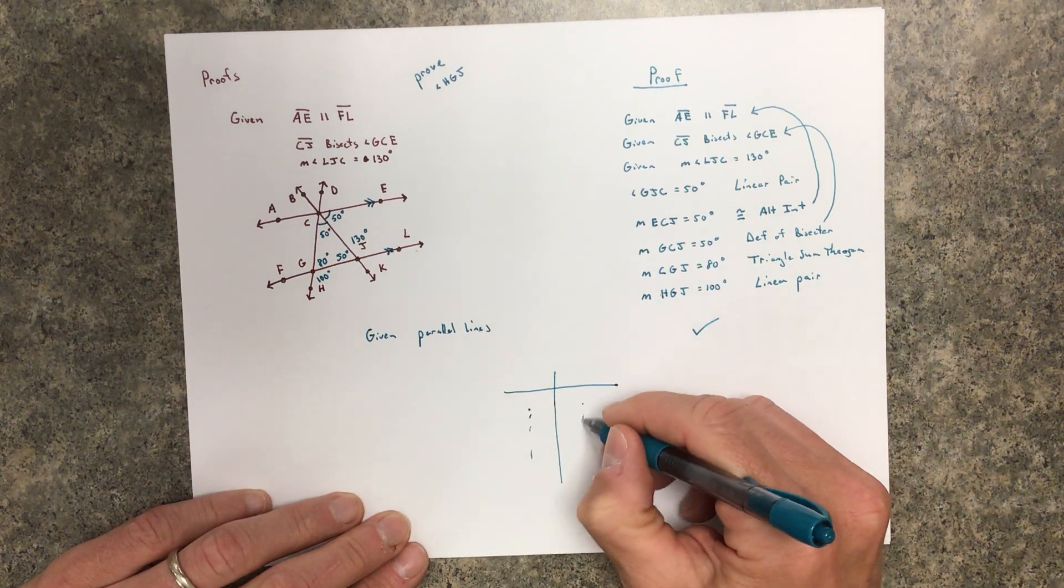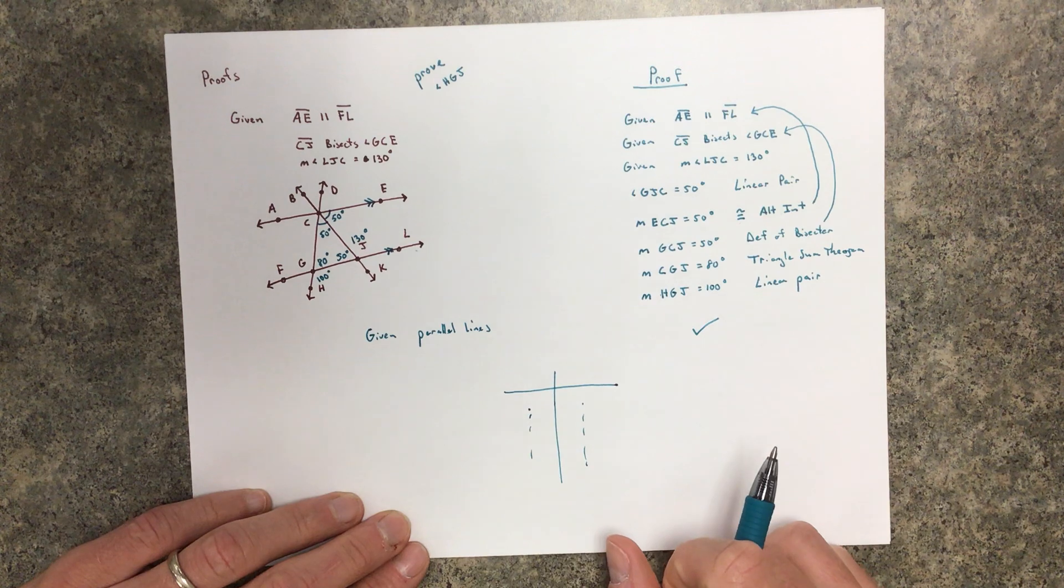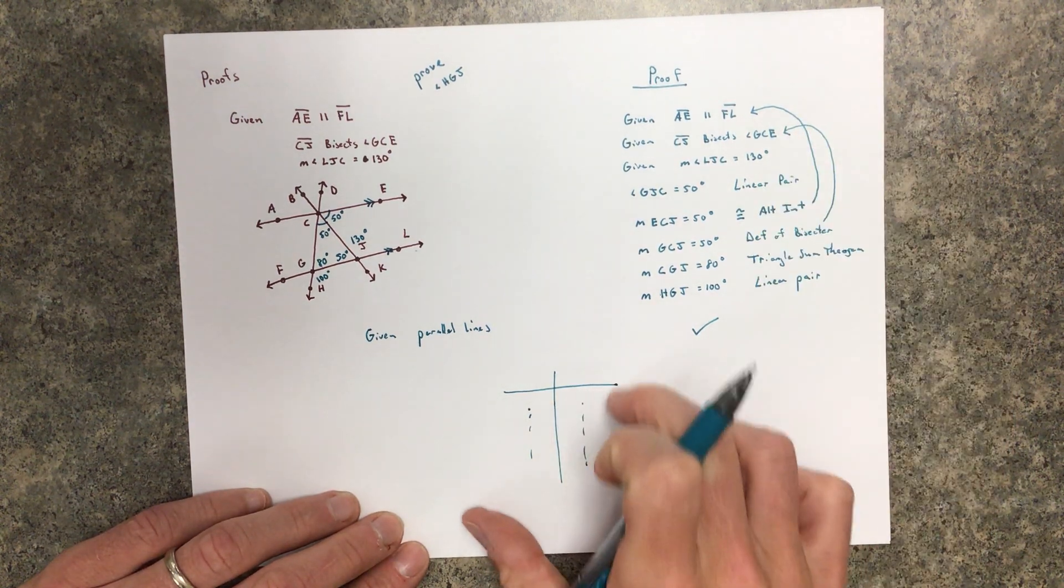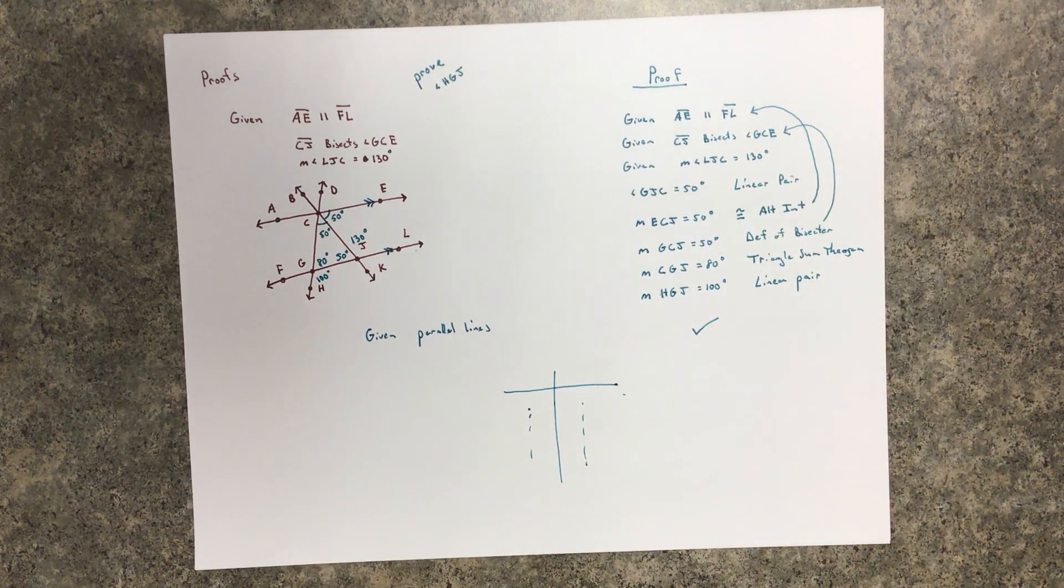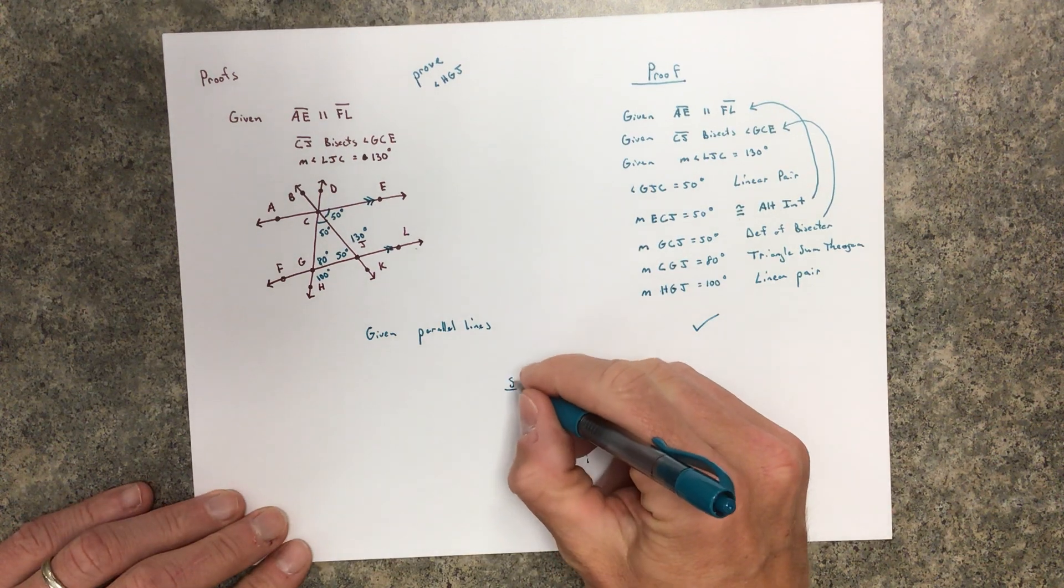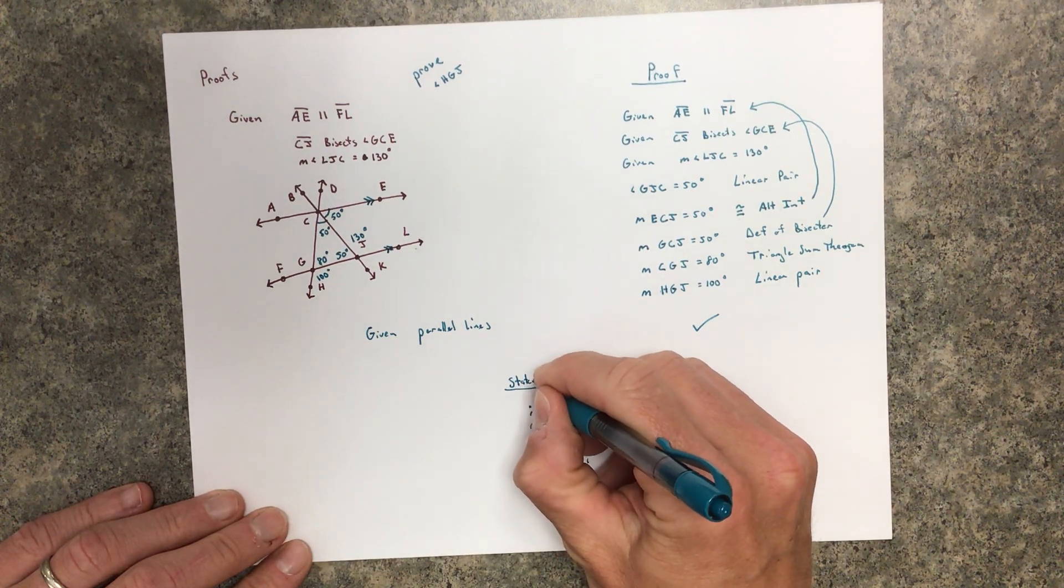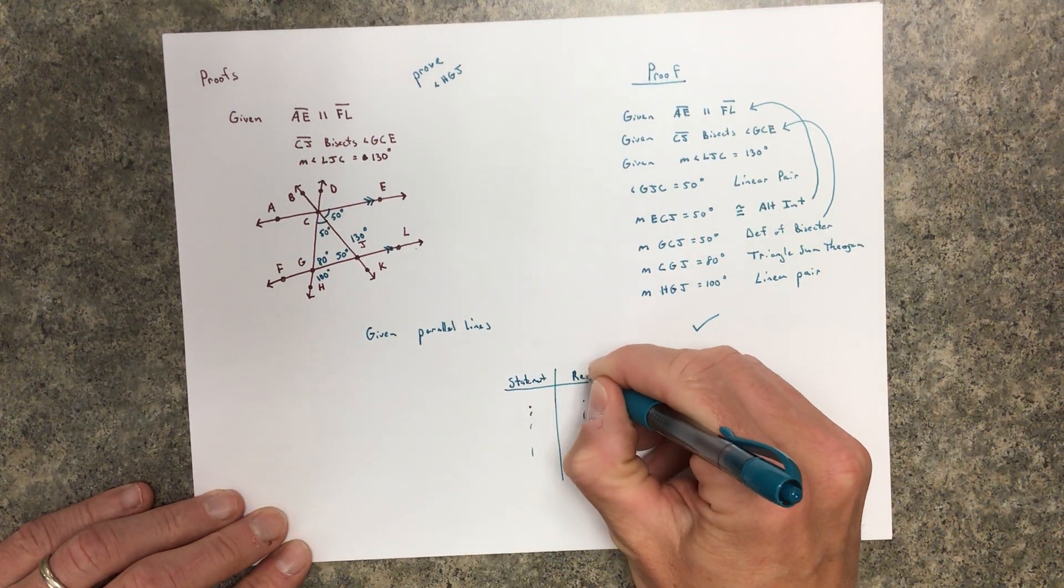Feel free to do a two-column proof with statements and then reasons over here. Or you can write it out in a paragraph, but me writing it out like this is pretty much doing a two-column proof where you have statements and then reasons.